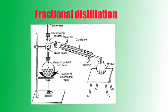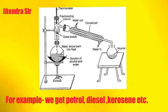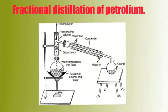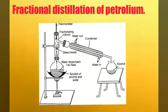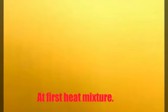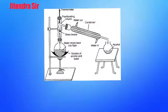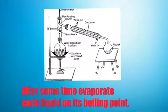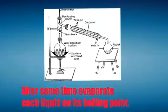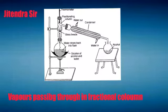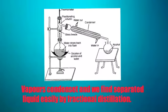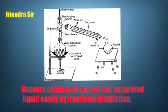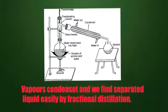Next topic is fractional distillation. For example, we get petrol, diesel, kerosene, etc. from fractional distillation of petroleum. Let's start the experiment. At first, heat the mixture. After some time, each liquid evaporates at its boiling point. Vapors pass through fractional columns. Vapors condense and we find separated liquids easily by fractional distillation.